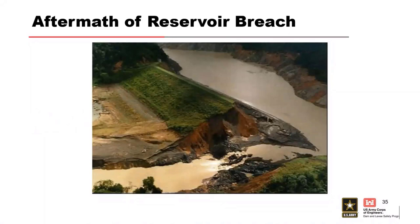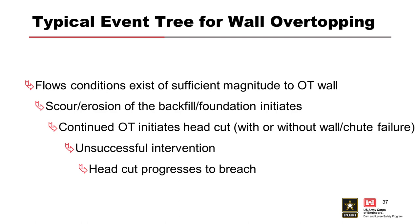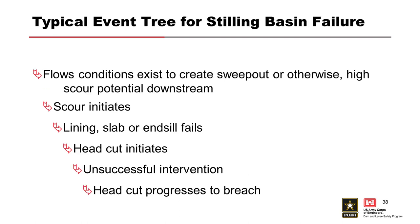The typical sequence of events is pretty straightforward: flow results in wall overtopping, then scouring and erosion leads to head cutting along the side or undermining, and directly into chute slab failures progressing through the head cut and back into erosion of rock and soil. Intervention is unsuccessful — with spillways, interventions generally involve gated structures that we can close operationally. It progresses to breach. Stilling basin failures follow essentially the same sequence.